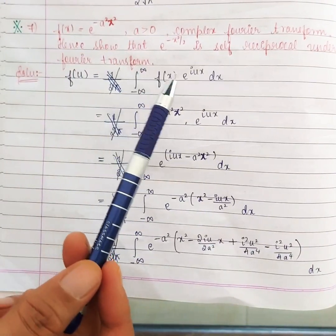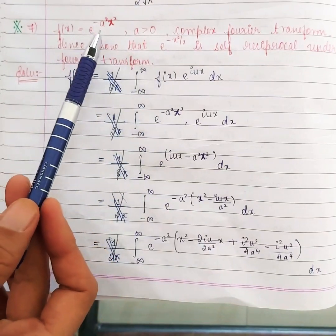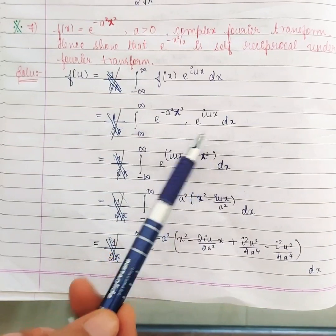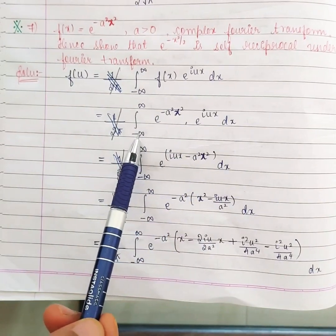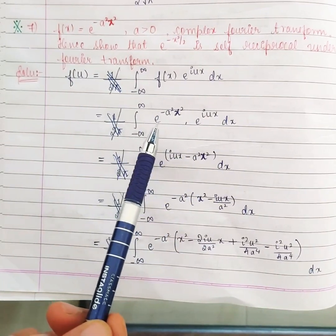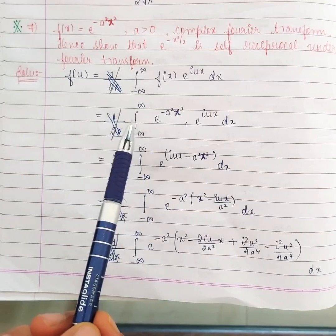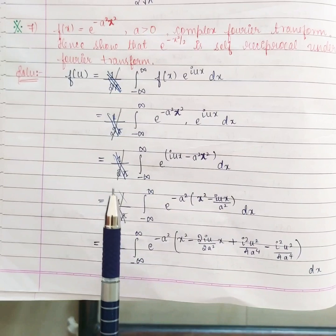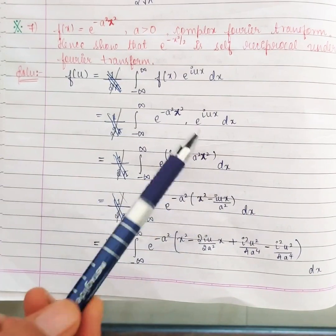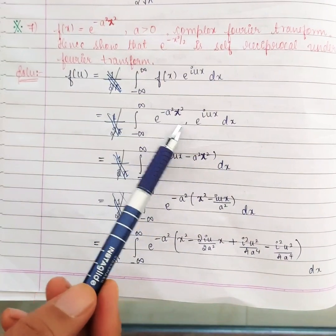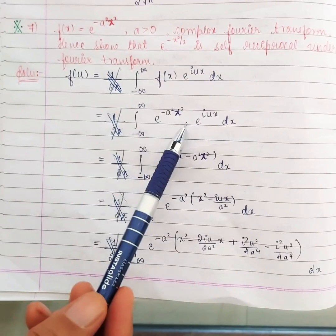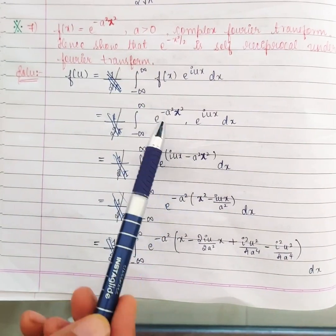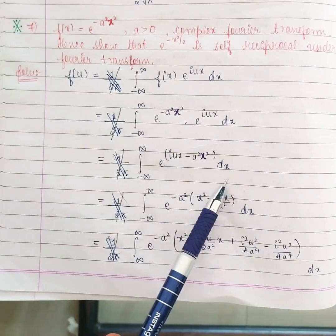So the integral is from minus infinity to infinity of f(x) = e^(-a²x²) multiplied by e^(iux) dx. Since the base is the same (e), we can combine the exponents and write it as e^(iux - a²x²) dx.